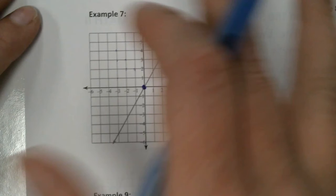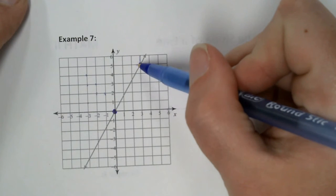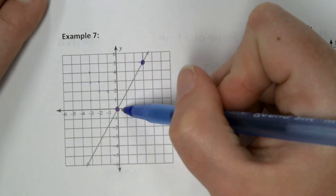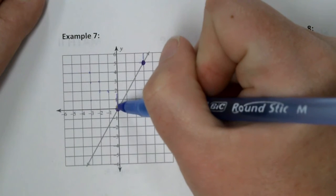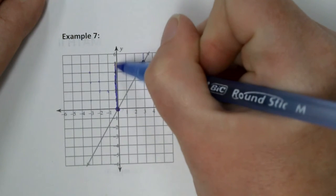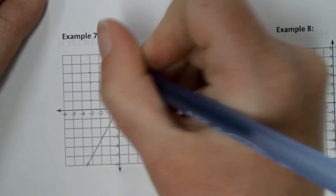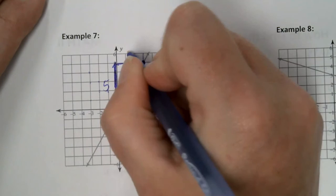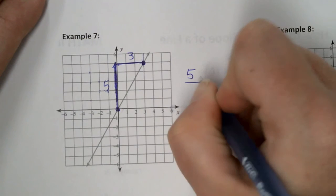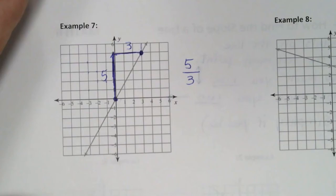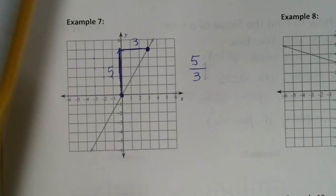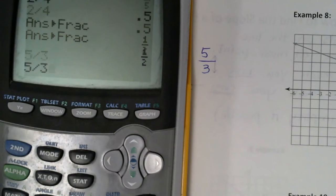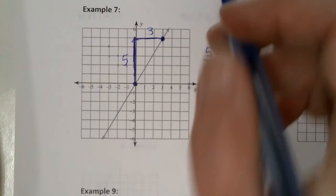All right, which one of these points is more to the left? The lower one, right? So we start at the lower one. How far do we rise? Five. And then how far do we run? Three. So my rise is five and my run is three — five over three. I don't think this one reduces, but let's check. Five over three is the answer.